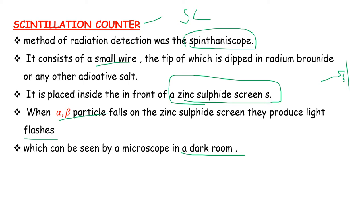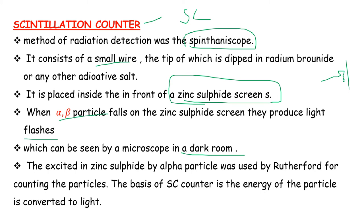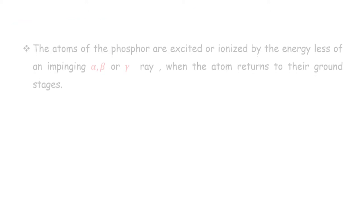The scintillation excited in zinc sulfide by alpha-beta particles was used by Rutherford for counting the particles. The basic principle of the scintillation counter is the energy of the particles is converted to light. This is a very important point.